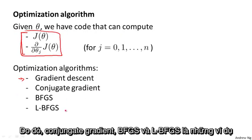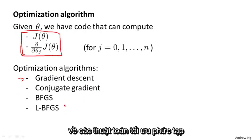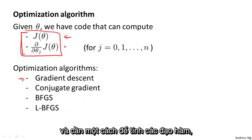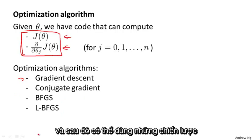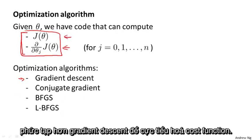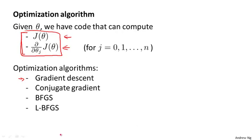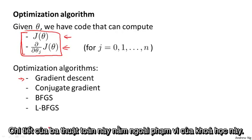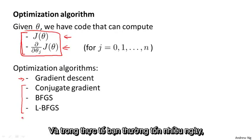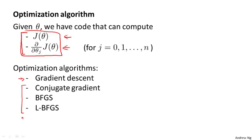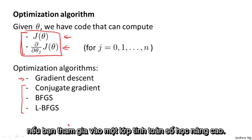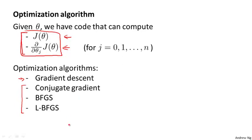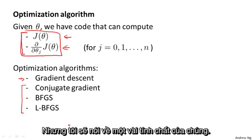Conjugate gradient, BFGS, and L-BFGS are examples of more sophisticated optimization algorithms that need a way to compute J of theta and a way to compute the derivatives, and can then use more sophisticated strategies than gradient descent to minimize the cost function. The details of exactly what these three algorithms do is well beyond the scope of this course — you often end up spending many days or a small number of weeks studying these algorithms in a class on advanced numerical computing. But let me just tell you about some of their properties.